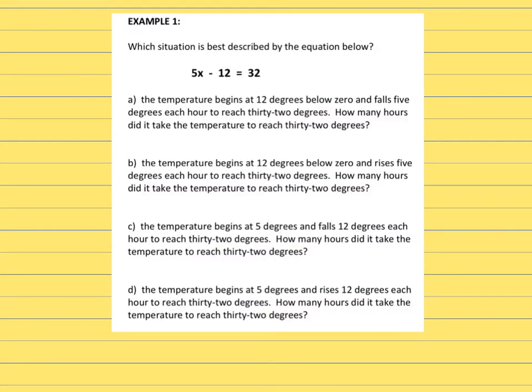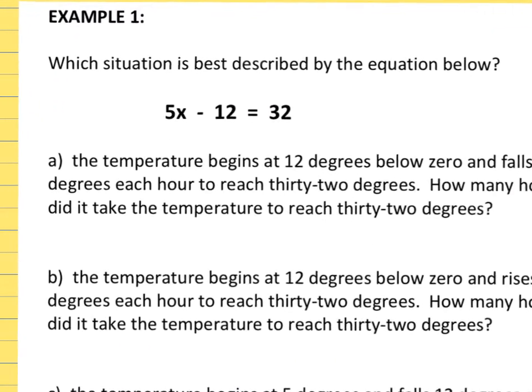We're going to look at one equation and then look at four different multiple choice stories that could go with it. So this says 5X minus 12 is 32. So we need to identify our constant and our variable.